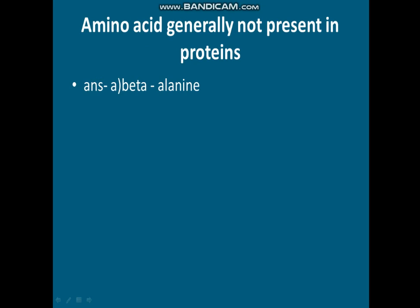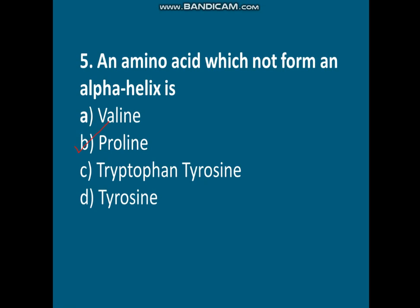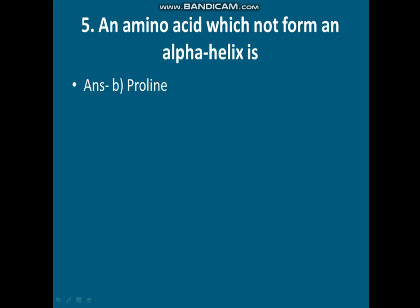Question five: an amino acid which does not form an alpha helix. As discussed in previous videos on protein structures - primary, secondary, tertiary - some amino acids form alpha helix structures. Options are: A) Valine, B) Proline, C) Tryptophan and Tyrosine, D) Tyrosine only. The correct answer is option B, Proline. Proline does not form an alpha helix.